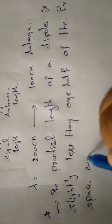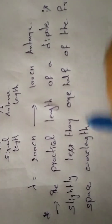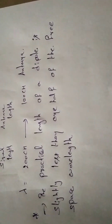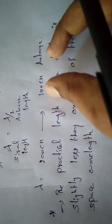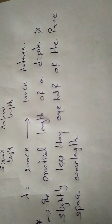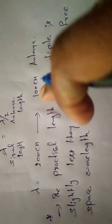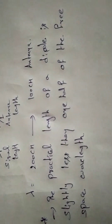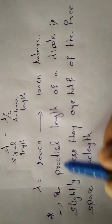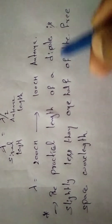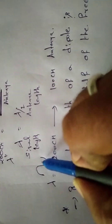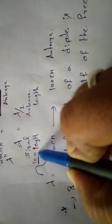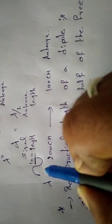Free space wavelength — the point is: for a 200 cm signal wave, the practical half of the wavelength is 100 cm. The practical length of the dipole is slightly less than one half — about 100 cm.